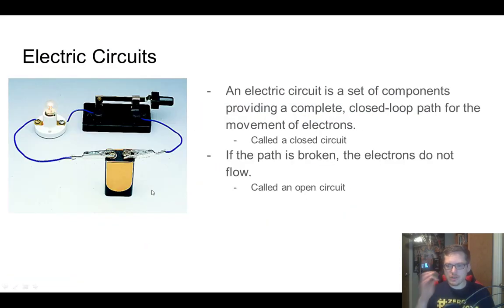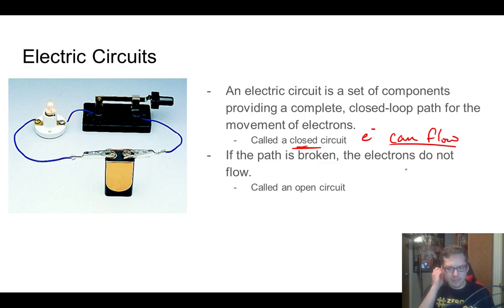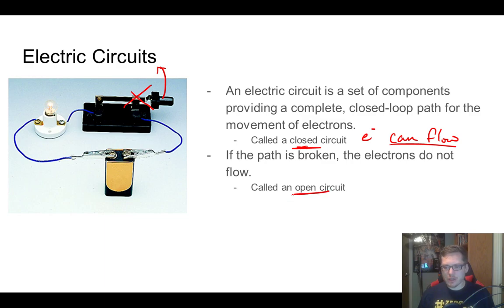Electric circuits: if a circuit has a closed loop path, we call that a closed circuit — electrons can flow. If the path is broken, imagine lifting a switch handle so it's no longer connected — electrons cannot flow, and we call that a broken or open circuit.